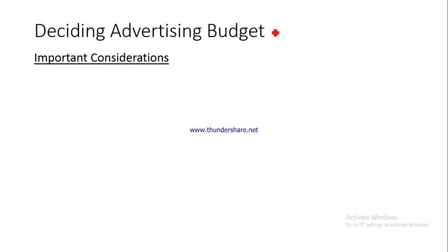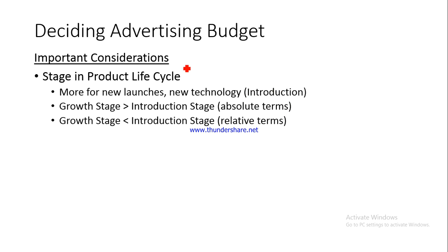However, whenever you are going for advertising, you have to keep some important considerations in mind. One consideration is which stage your product is in as far as the product life cycle is concerned. For example, if your product is new - you are launching it for the first time - such as smart watches around 5 to 6 years ago being a new technology, or launching a new brand of automobiles - your product would be in the introduction stage.